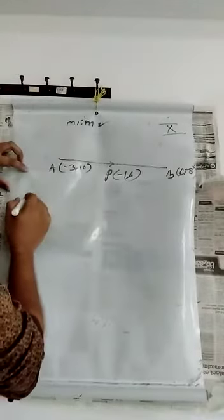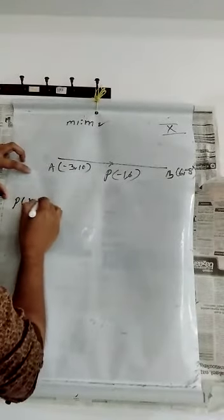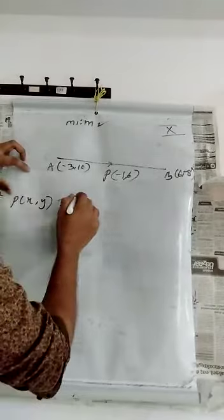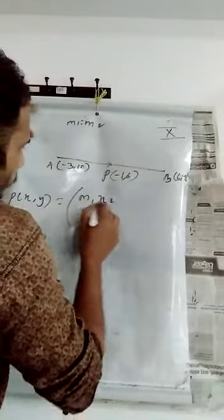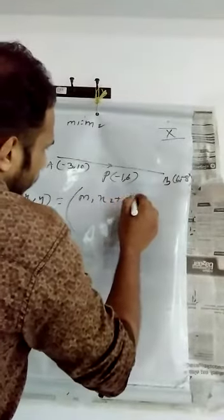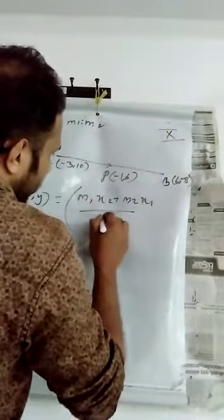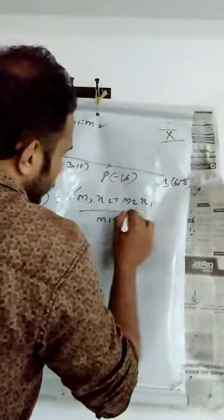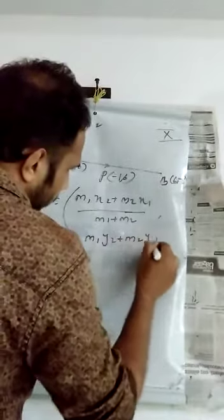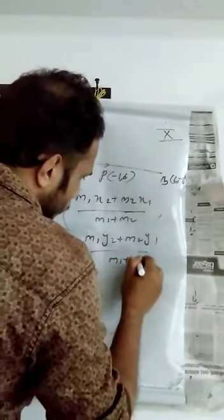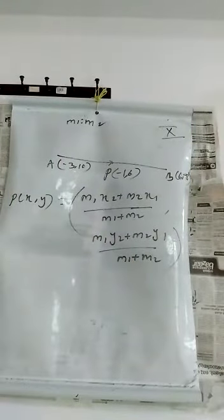How we can do this? In problem number 2, very simple. You can write that P(X, Y) equals X coordinate in one line. You can write M1·X2 plus M2·X1 by M1 plus M2. And the Y coordinate is M1·Y2 plus M2·Y1 by M1 plus M2. That is X means this and Y coordinate in one.